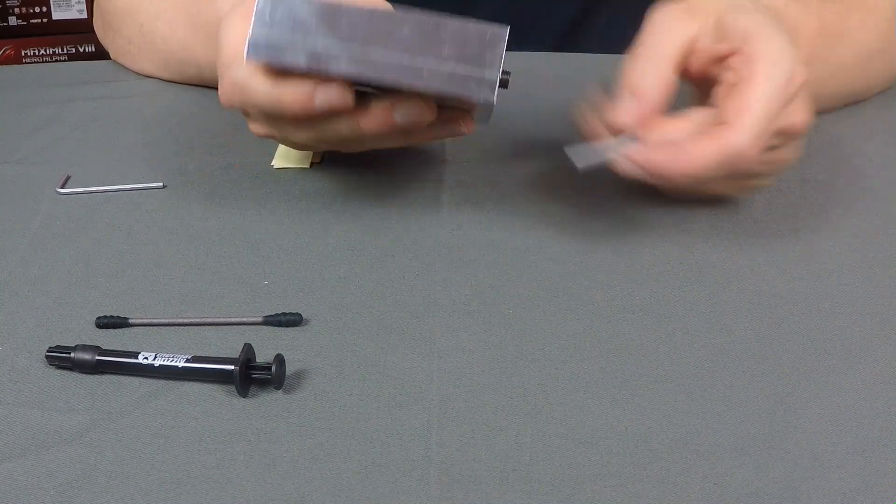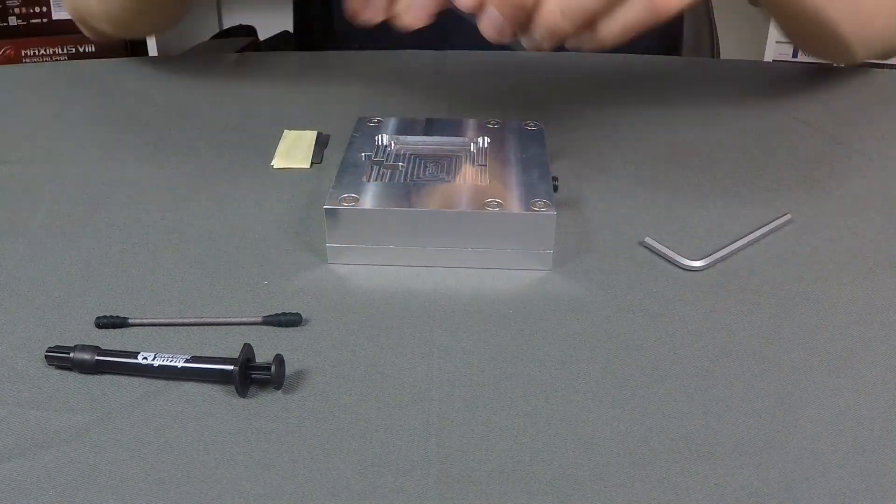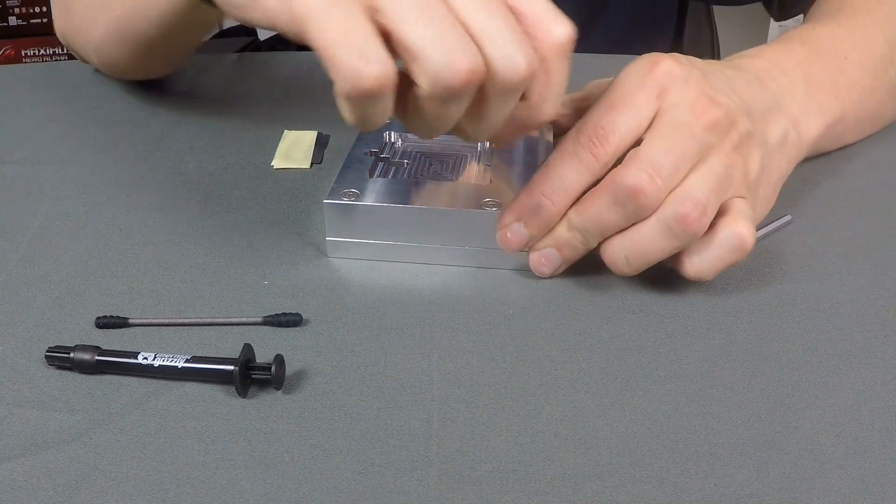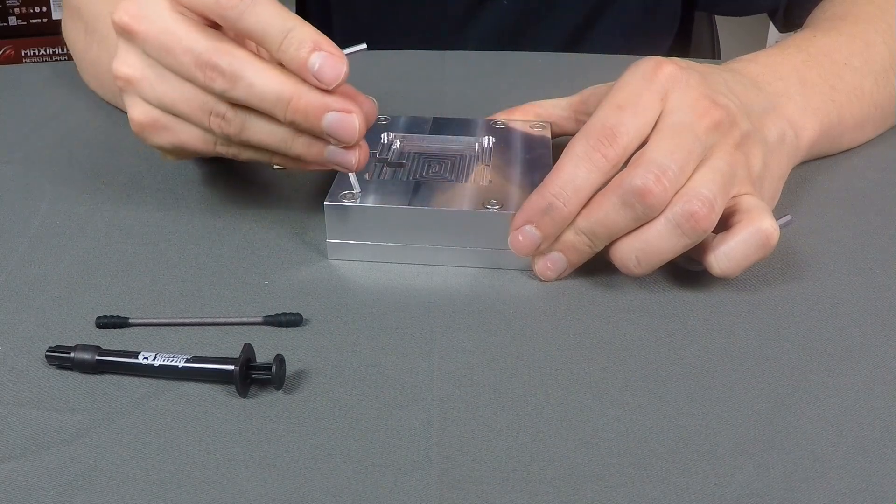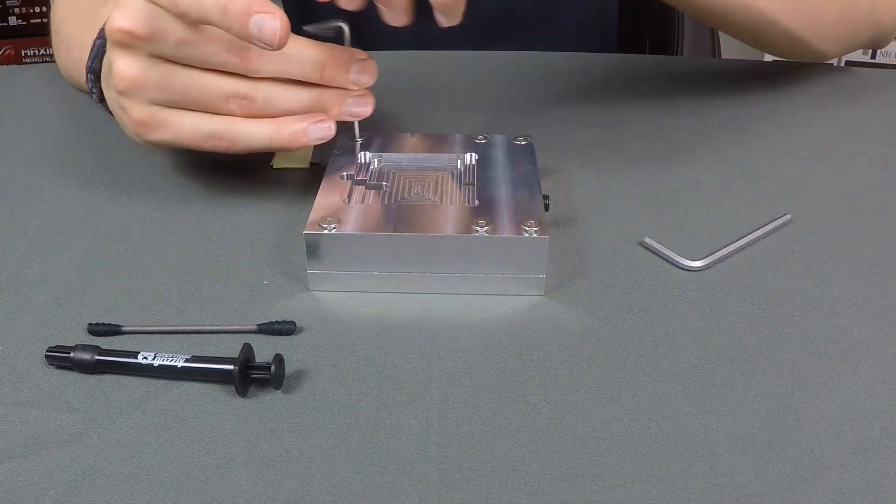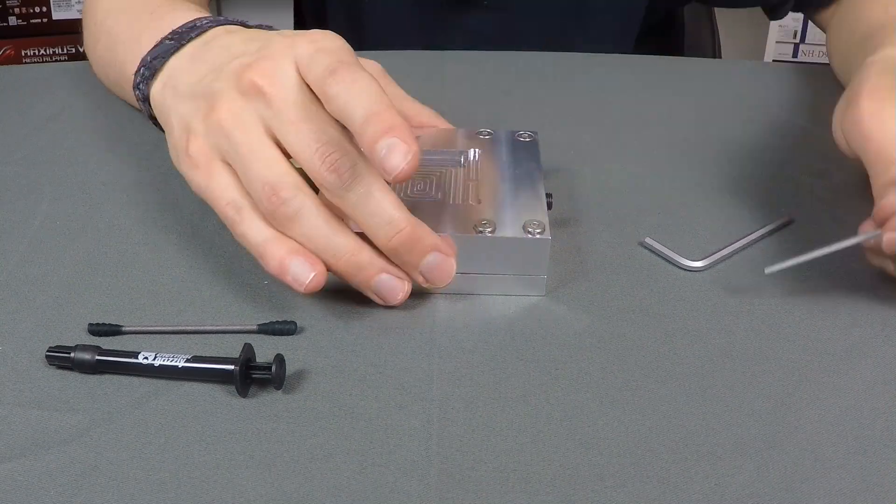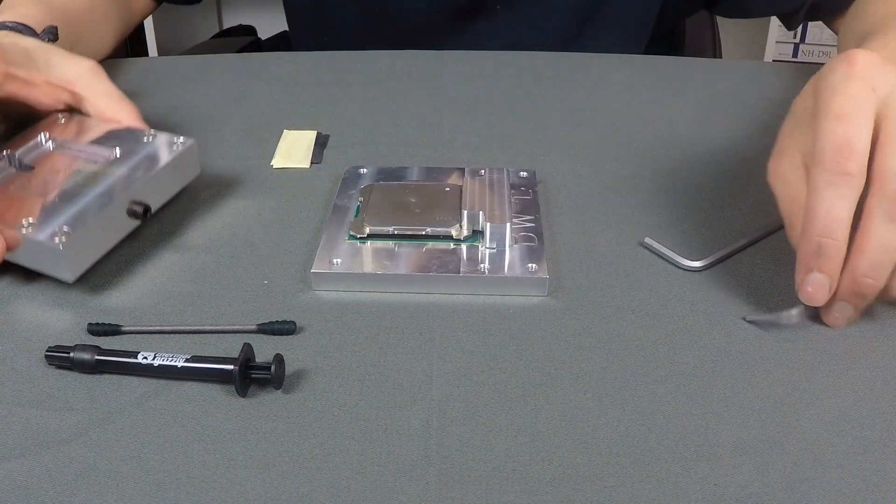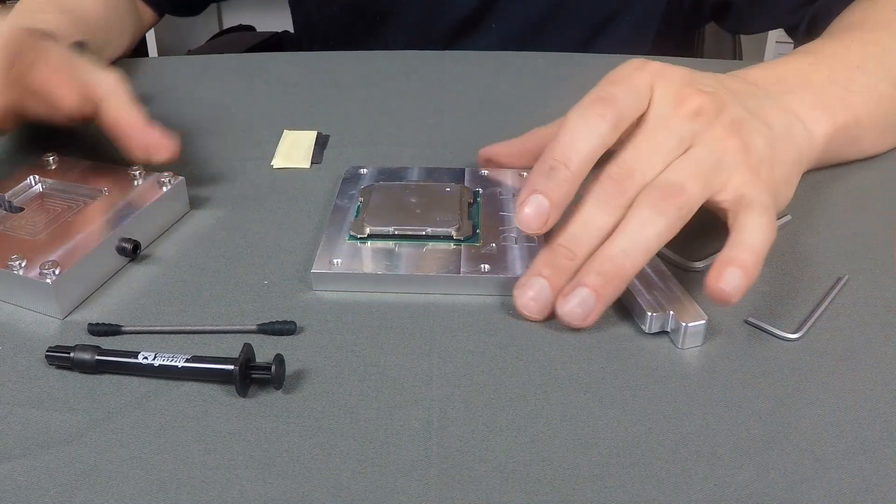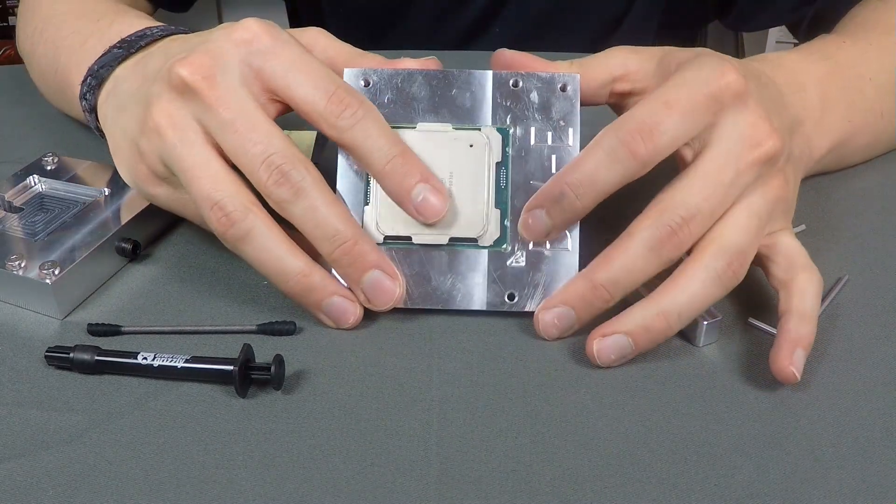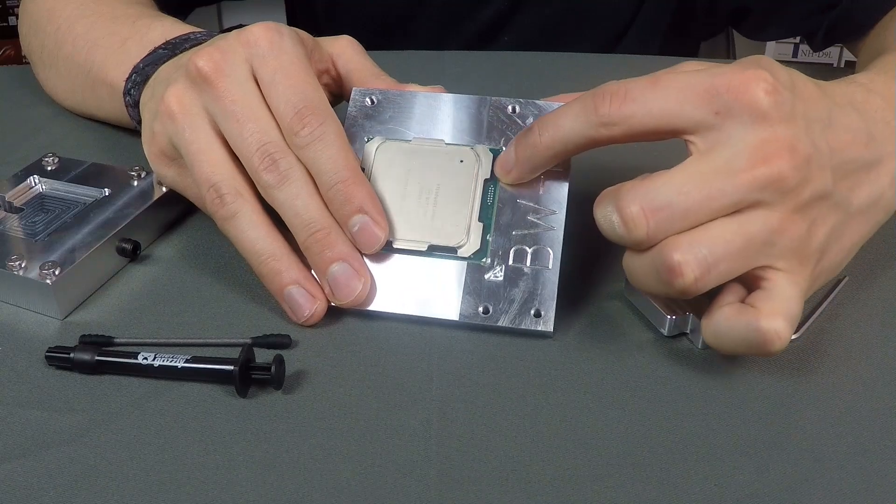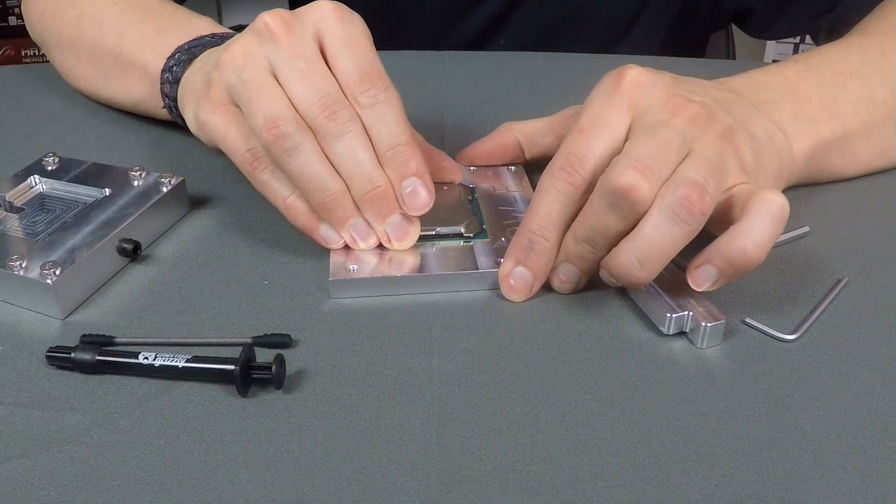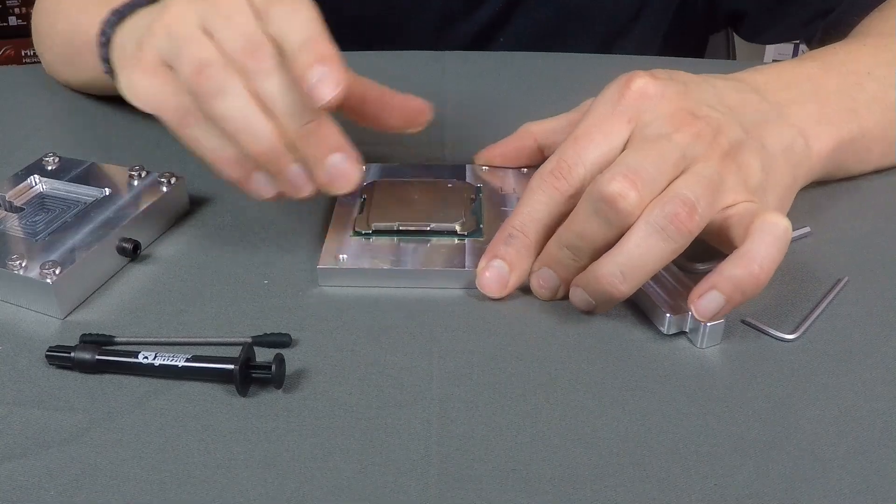Now after you could see that it moved around one millimeter, use the hex key again and loosen the screws to remove the top part. Take off the slider, and now you can already take a look at the first step of the delidding process. You can see that the glue is visible underneath the IHS. This means the glue got loose, but the CPU is still soldered. It's still hard to remove the IHS.